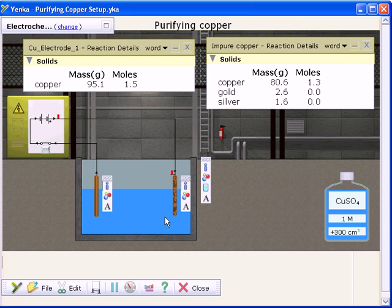Here we can see the mass of the pure copper electrode increasing as the mass of the impure copper electrode is decreasing.